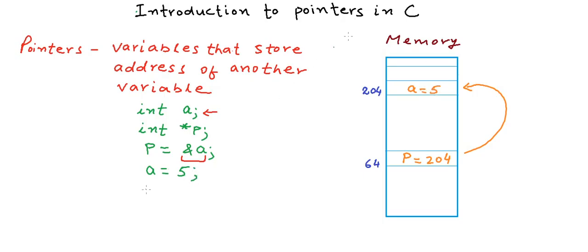Now what will happen if I print P? What will be the output? Any guesses? Think about it. Okay, so if we try to print P then the output will be 204 because P has a value 204. What if we simply try to print ampersand of A? Ampersand of A also gives us the address of A, so this will also be 204.